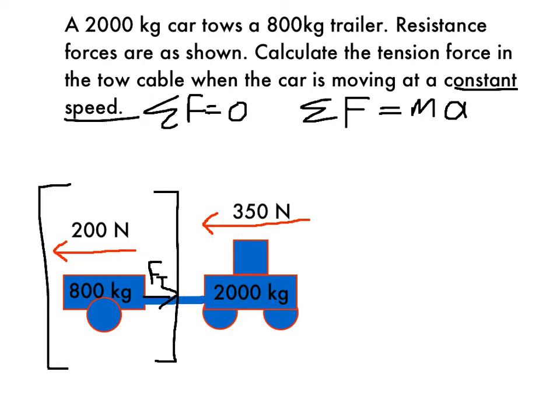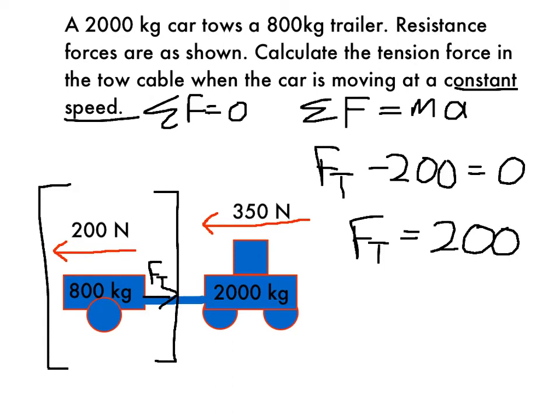These two must cancel out. So, FT minus 200 must equal zero. And so, the tension force at this point equals 200 newtons.